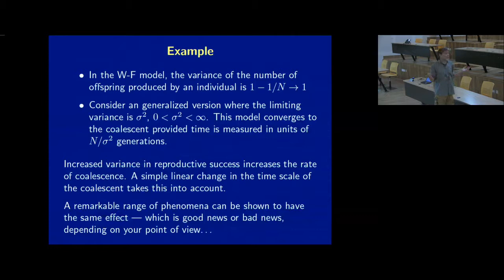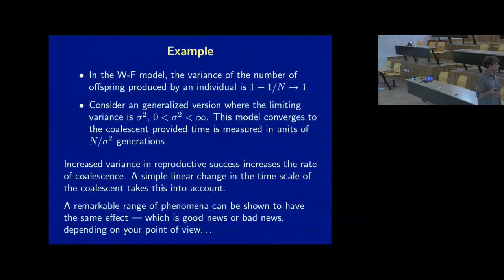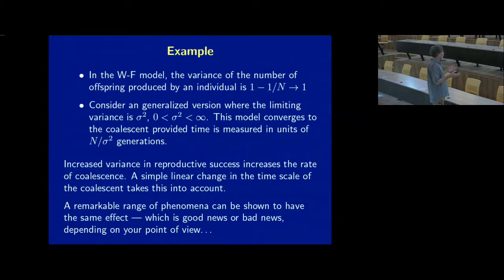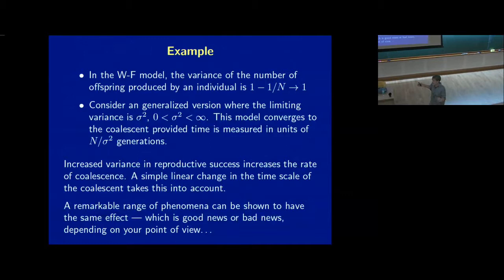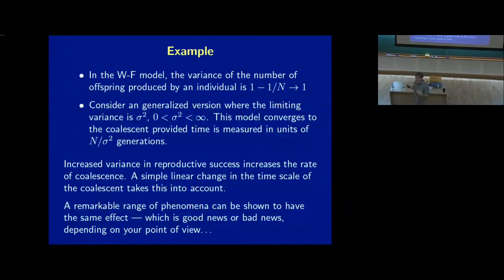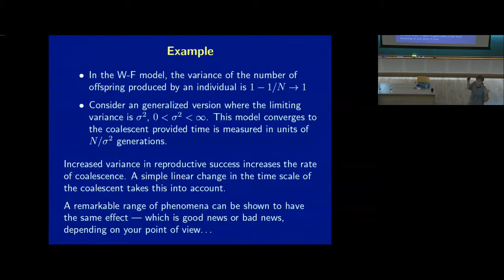In the Wright-Fisher model, the variance of the number of offspring produced by an individual goes to one as the population is large — it's binomial sampling, everyone is equally likely to reproduce, you just sample with replacement from the previous generation to make the next generation. But in reality, it doesn't have to be like that. If you actually go and look at offspring number, it usually has bigger variance — take some plant species where maybe 90% get eaten by goats before they reproduce, and the variance is much much higher.